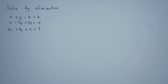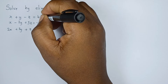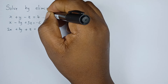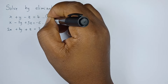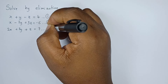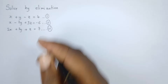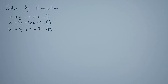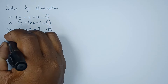Let's solve this system of equations by elimination. This is equation one, this is equation two, and this one is equation three. I can opt to eliminate x in the first two equations, or z in the first and third equations, because they have a coefficient of one. Let me pick equations one and two.